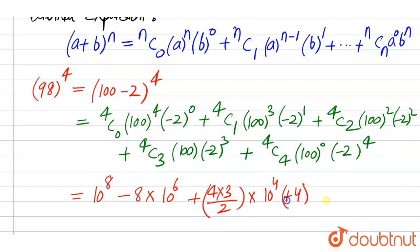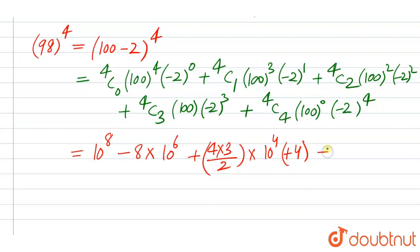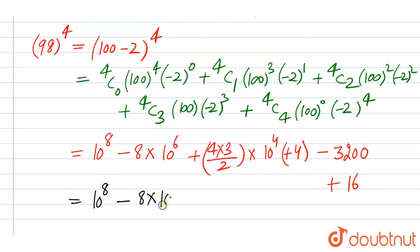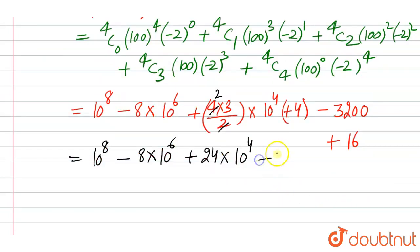This gives minus 24 into 10 to the power 4. Then the next term gives plus 16, so this becomes minus 8 into 6, that is minus 24 into 10 to the power 4, plus 16. So we calculate: 10 to the power 8, minus 8 into 10 to the power 6, plus 24 into 10 to the power 4, minus 32 into 10 squared, plus 16, and we get the final result.